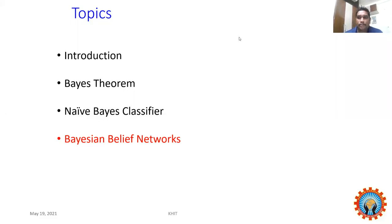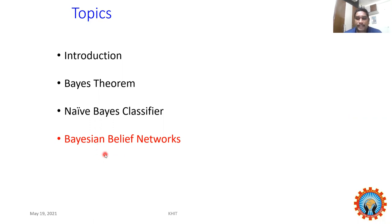Last class we discussed Bayesian error rate and the characteristics of the Naïve Bayes classifier. In this session we are going to discuss the last topic in our fourth unit called Bayesian Belief Networks. We already discussed that if there are two or more attributes which are correlated to each other, the Naïve Bayes classifier could not perform better.